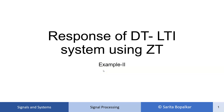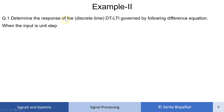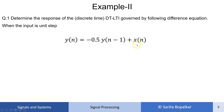In this video we are solving the second example to find the response of a discrete-time LTI system using Z transform. The example is: determine the response of a discrete-time LTI system governed by the following difference equation — y(n) = -0.5·y(n-1) + x(n) — when the input is a unit step signal.